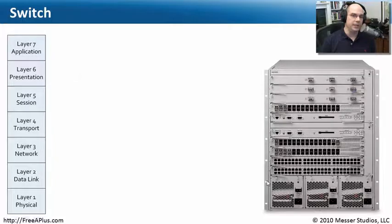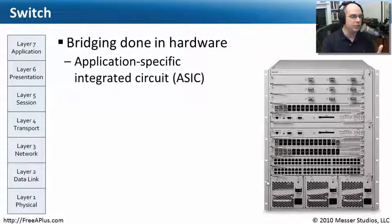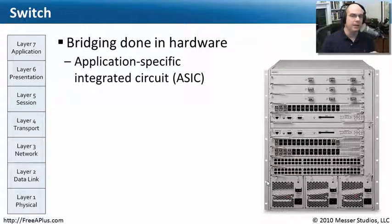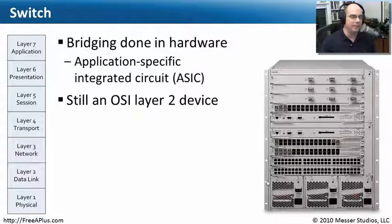These days, we do everything with switches. This is the grown-up version of a hub because it decides where to send traffic intelligently in the hardware — a natural evolution of our technology. It uses something called ASICs — Application-Specific Integrated Circuits. Using these chips in hardware, we're able to quickly switch from one port to another. If I'm on port one and need to communicate with the device on port five, I don't send traffic to everybody — the switch knows to send it just to that device on port five. This is an OSI Layer 2 device.